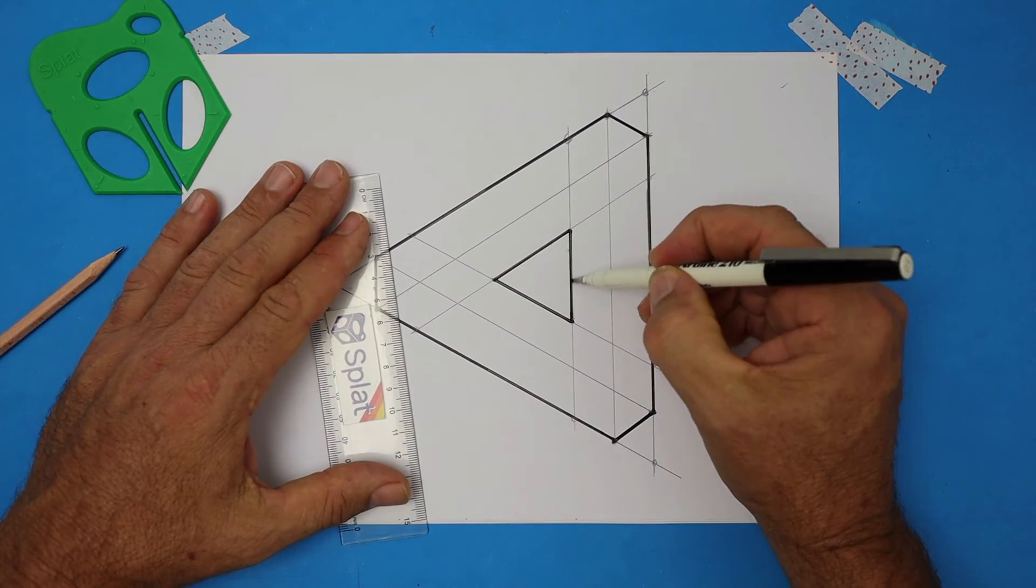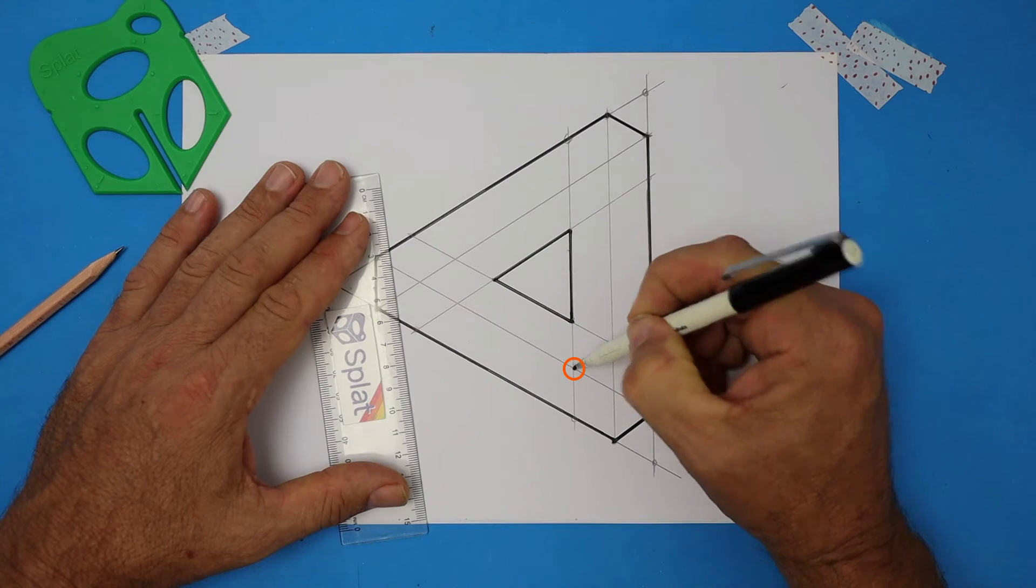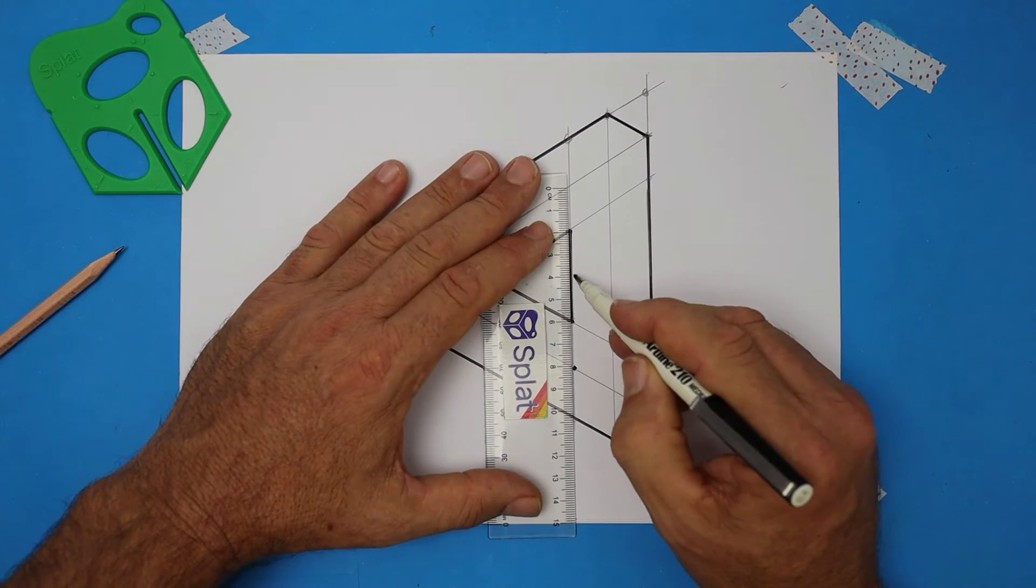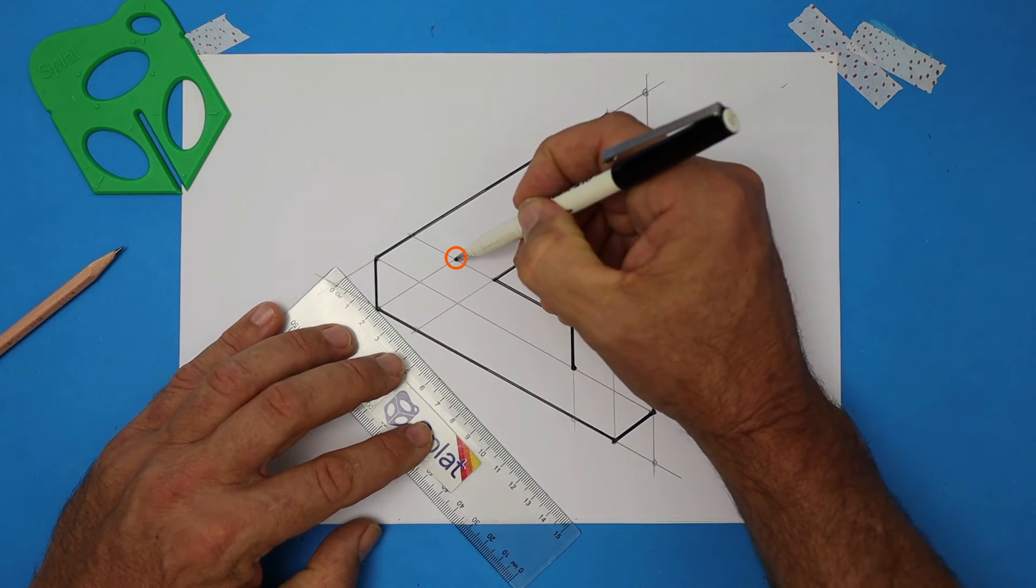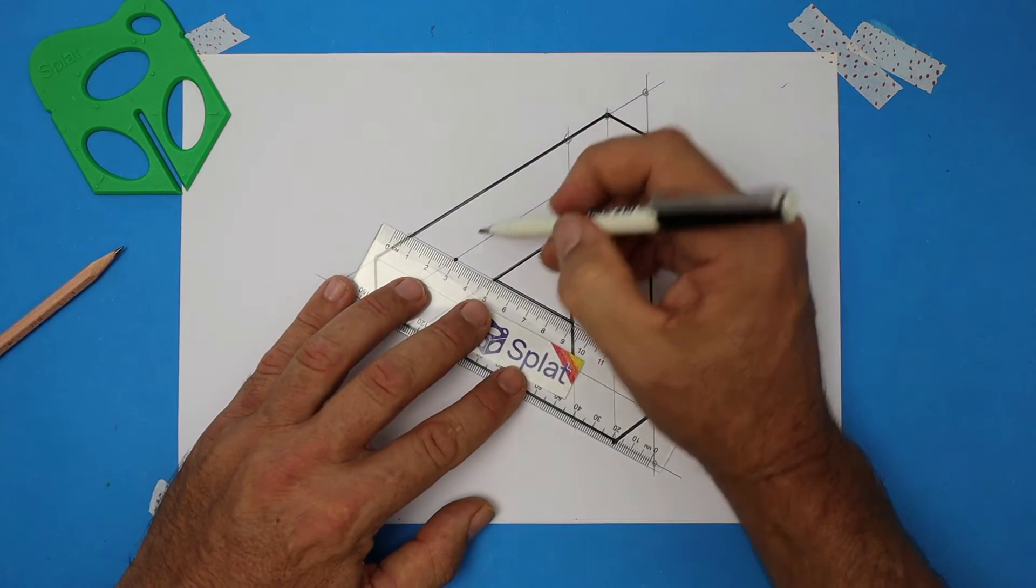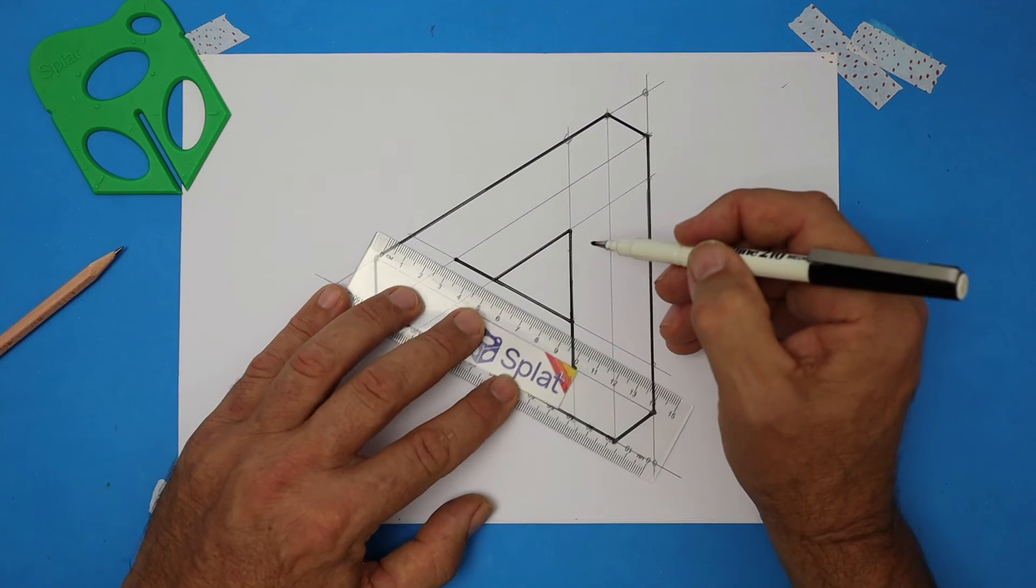We're going to find that line and then extend it, but stop at the middle triangle. So extend downwards. Find that line and we'll keep extending to that point. Excellent. One more.